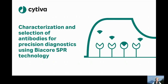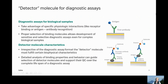Thanks for joining and welcome to my talk about the characterization and selection of antibodies or other proteins for precision diagnostics using Biocore SPR technology. For all precision diagnostic assays, defined detector molecules are needed. Nature provides us with numerous examples of such detectors like cell surface receptors that bind hormones or growth factors, or the well-known antibodies, each of them recognizing individual antigens, which can range from tumor markers to viral spike proteins.